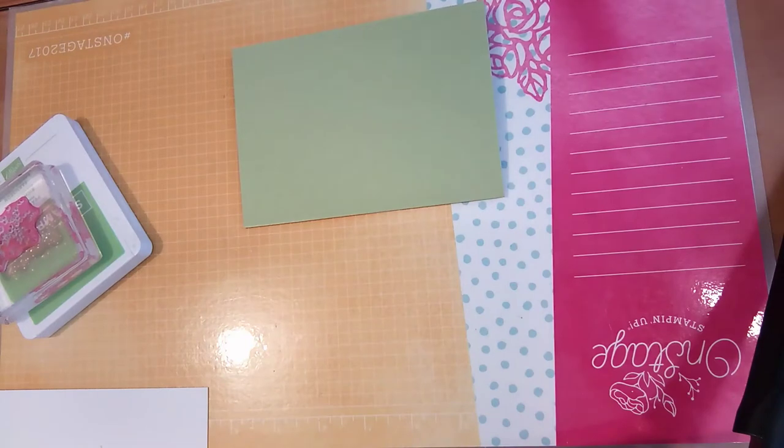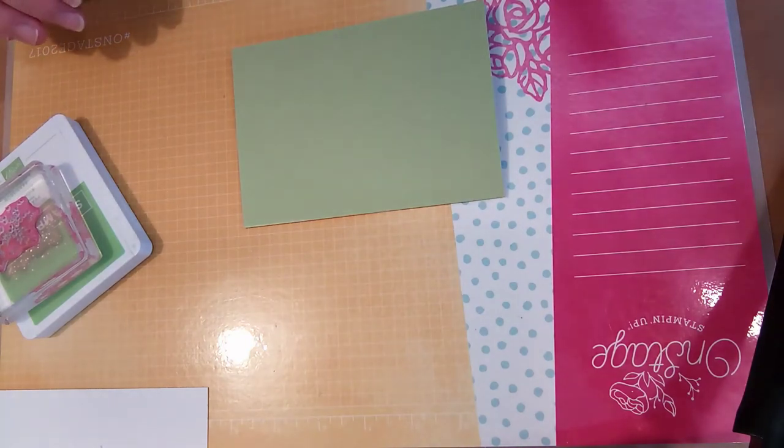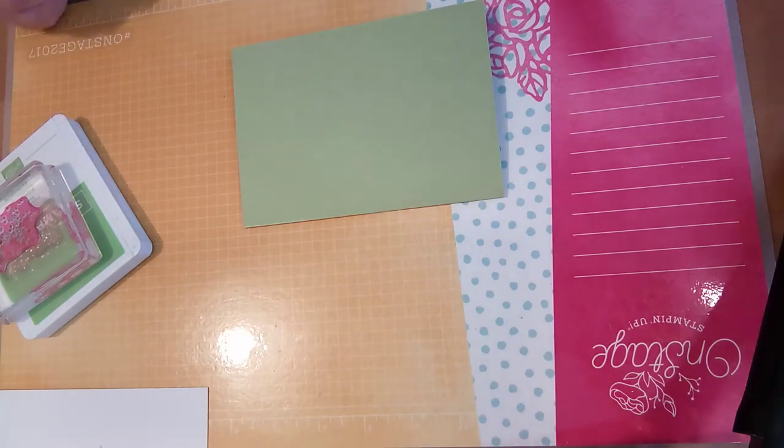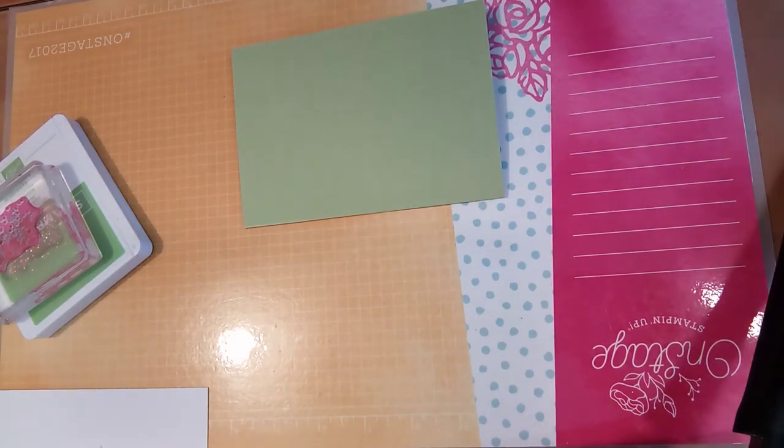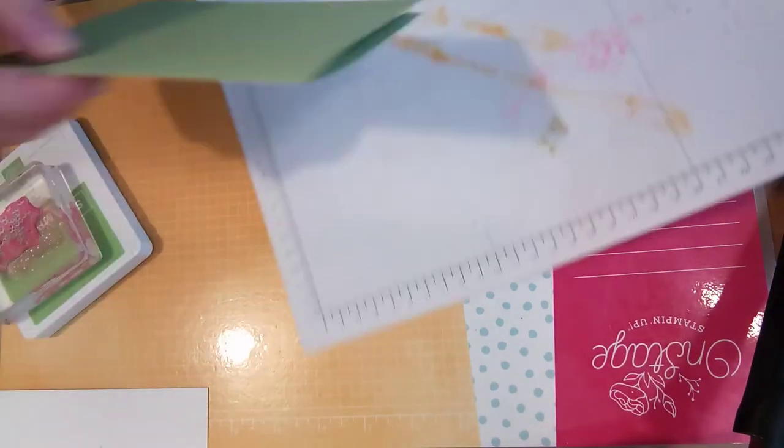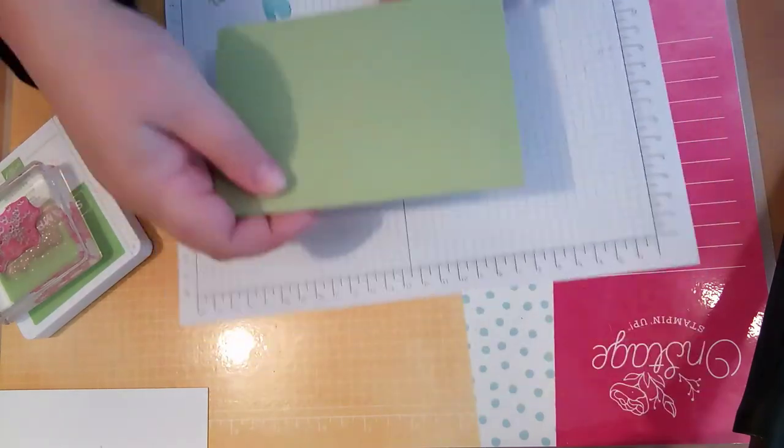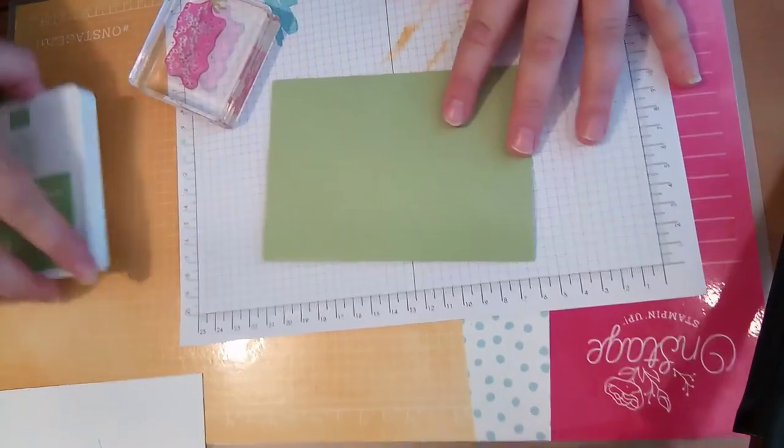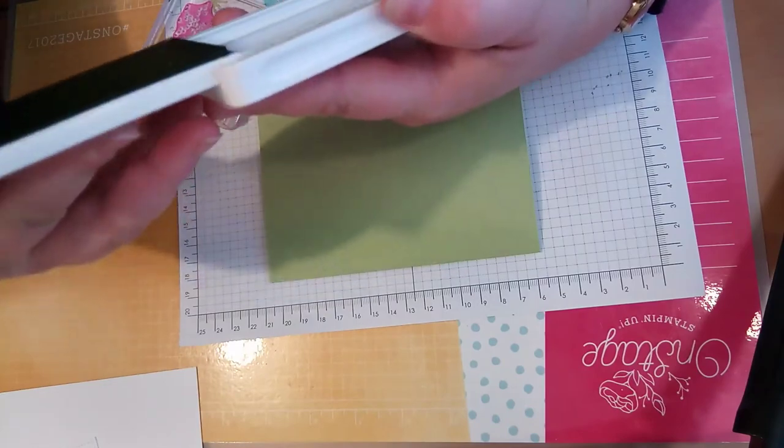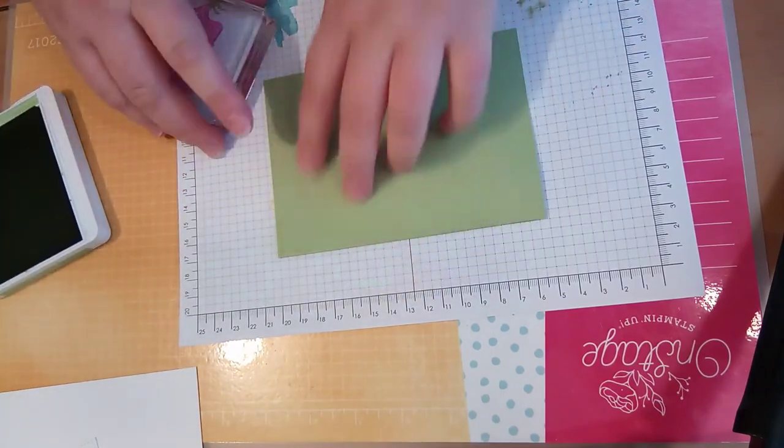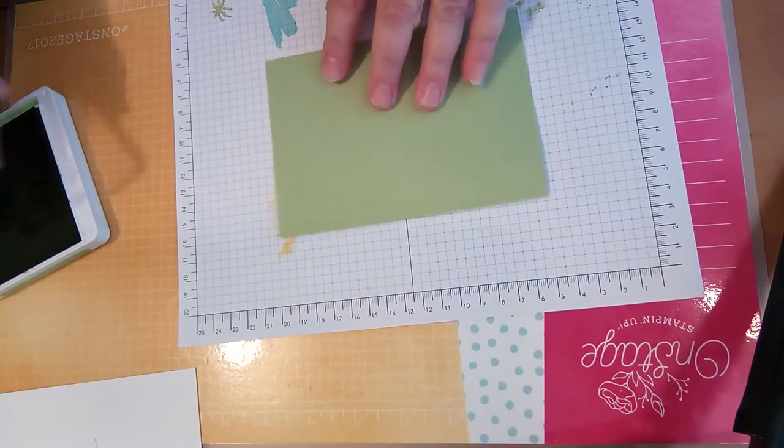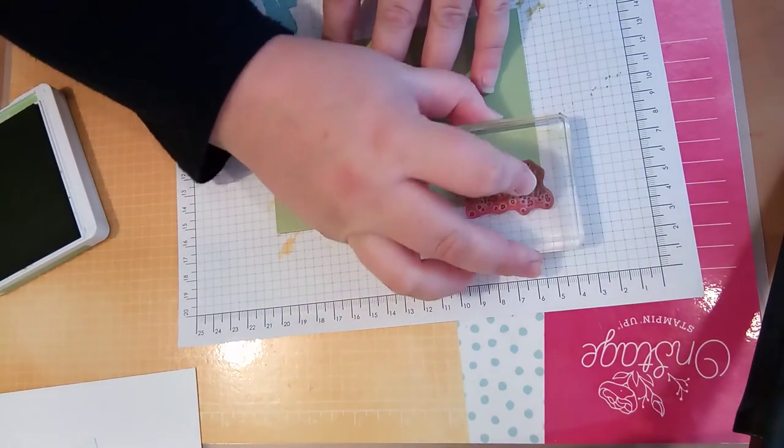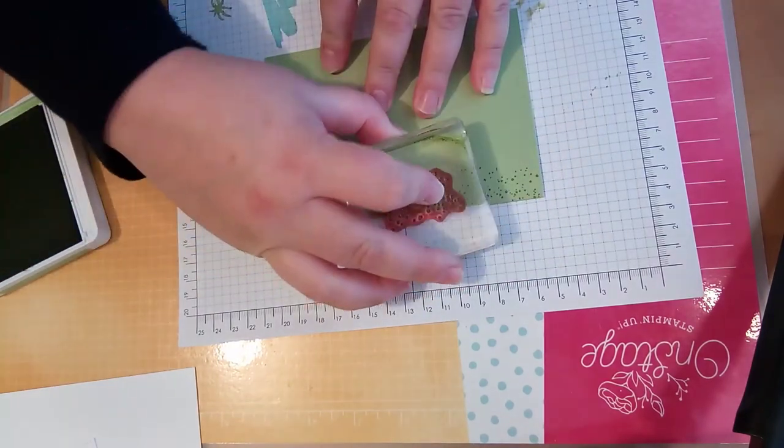Okay, so I am just going to grab scrap paper. Just a bit of scrap, and you can see this is scrap I have used before. So with the Pear Pizzazz ink there, I am just going to put the dots all the way around the edge just to create a bit of interest on the border that is going to be showing on the card front.